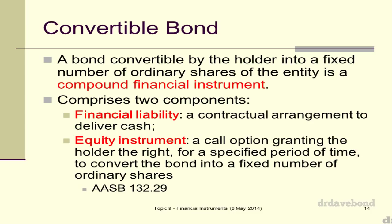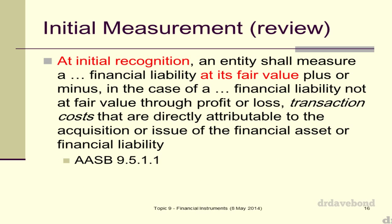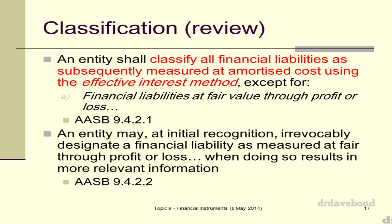What we're going to look at now is just a couple of quick slides before we look at the question. Initial recognition: you recognize a financial liability in the statement of financial position when and only when you become a party — so that's when Emma bought the instrument. At initial recognition, you measure it at fair value. In this case, that's not what Emma paid for the instrument, because the instrument wasn't just liability — it was liability and equity. So we can't just go off what she paid; we've got to look at what the liability component was worth. In terms of classification, we're going to use subsequently measured at amortized cost.